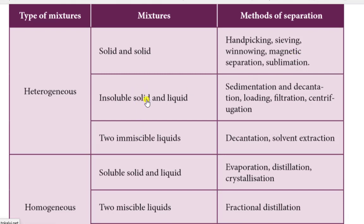Second type: insoluble solid and liquid. Sedimentation - if we allow a mixture to stand undisturbed, we will get sedimentation. Clear liquid is obtained by decantation. Next is loading, filtration, and centrifugation. Filtration is used in daily life - tea, coffee, juice, etc. Centrifugation uses centrifugal force to separate components. It is used in laboratories.